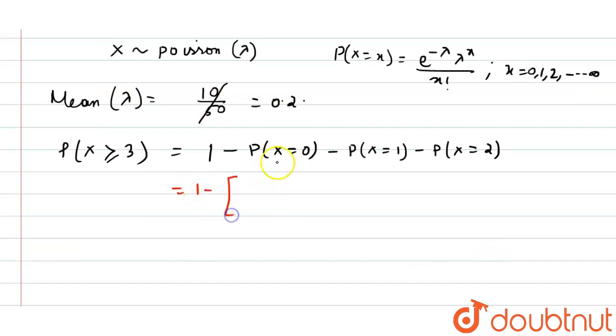So we get 1 minus probability of X equals 0, means e to the power minus lambda, lambda to the power 0 by 0 factorial, plus e to the power minus lambda, lambda to the power 1 by 1 factorial, plus e to the power minus lambda, lambda squared by 2 factorial.